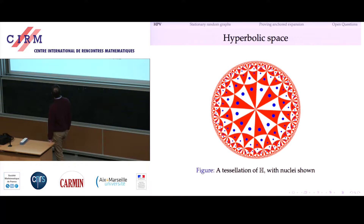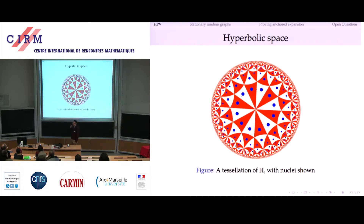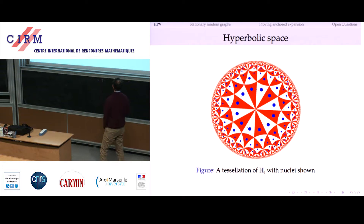Assuming everything is correct — this is a hand-drawn picture — what I believe the Voronoi points would be to make this a Voronoi tessellation. You'll notice little tiny blue specks; those are artifacts of how I drew it. The big blue specks are the cells.